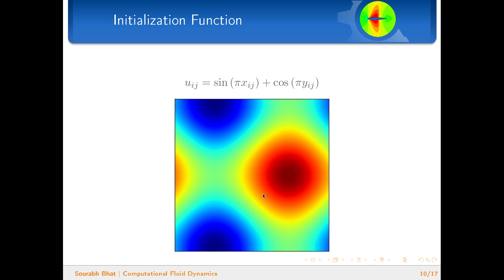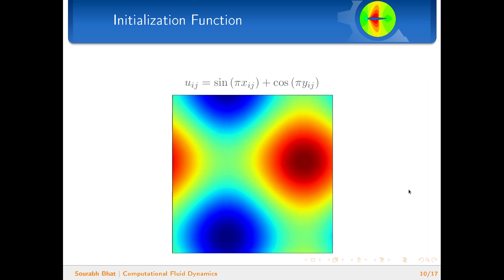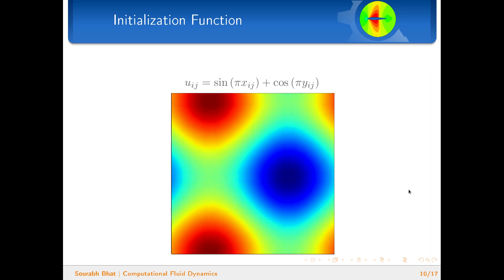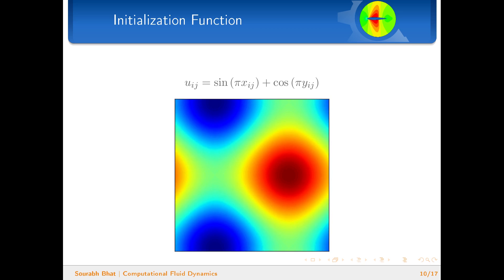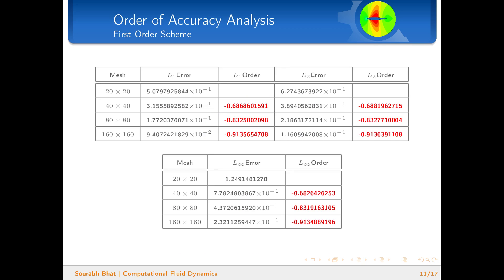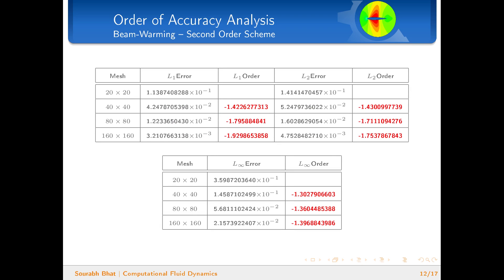Here is the solution obtained for this particular function—this is how it evolves. The first order scheme again produces an order of almost one as expected.